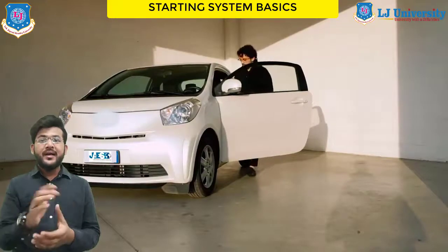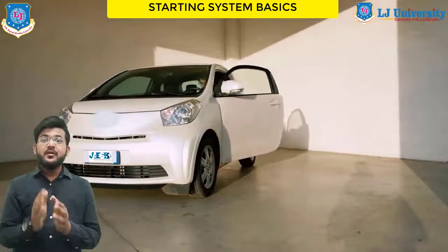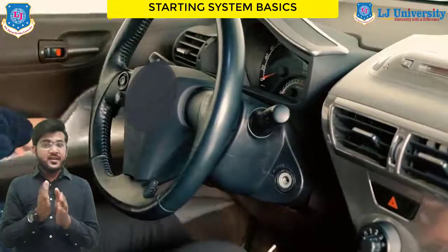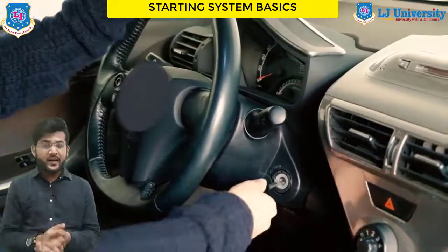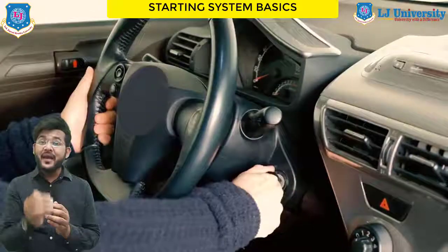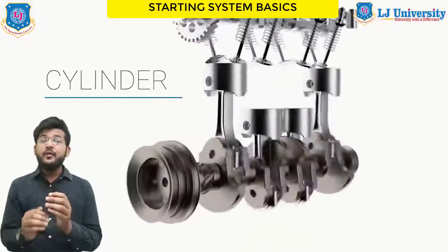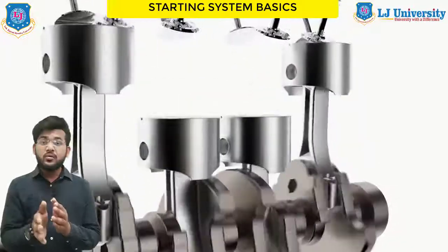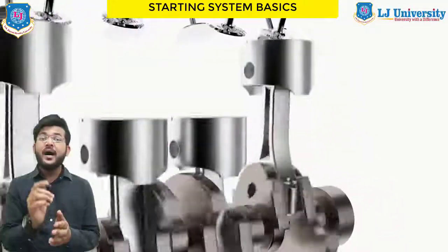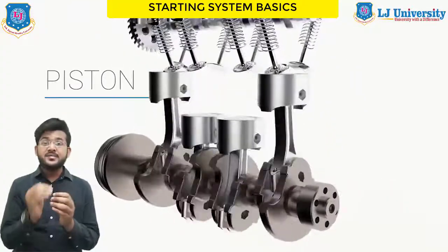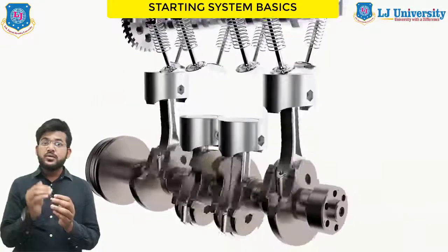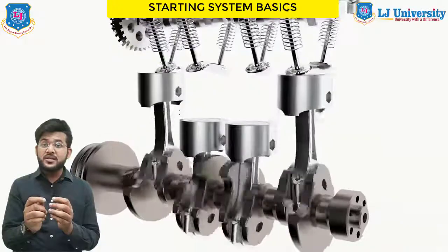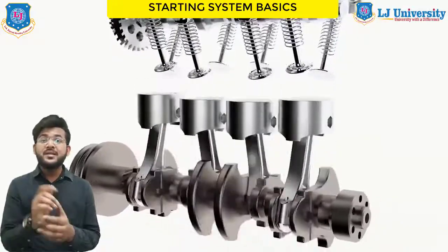In day-to-day life, we use our vehicles daily. So how do we start them? We use a kick or we turn the key for the electric start, but what is the starting system of the engine? As we know, the piston and cylinders are the heart of the IC engine, and the piston is moved by the crank, so this must be rotated — and this rotation is given by the kick or the electric starter.